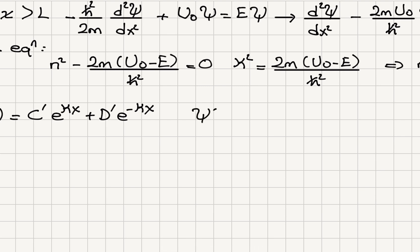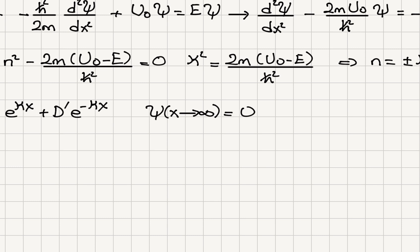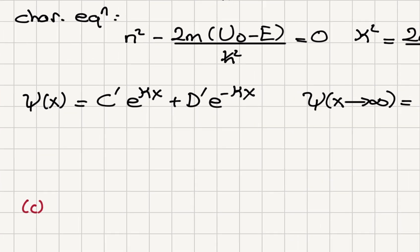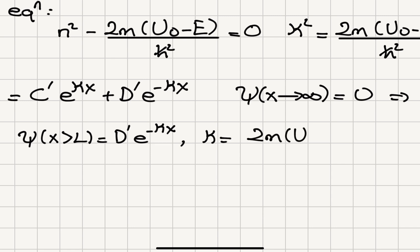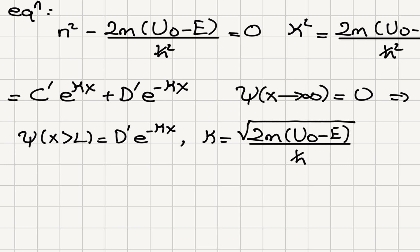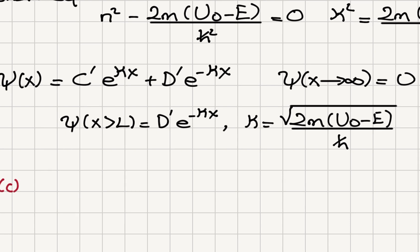Applying the boundary condition that ψ → 0 as x → ∞: the term D′e^(−κx) already dies off at infinity, but C′e^(κx) blows up, so C′ = 0. Therefore, for x > L, the solution is ψ(x) = D′e^(−κx), where κ = √(2m(u₀ − E))/ℏ.